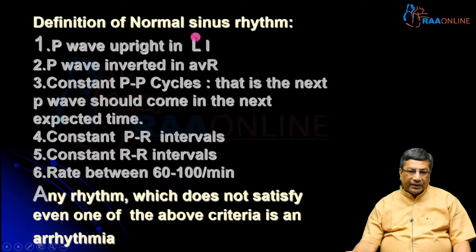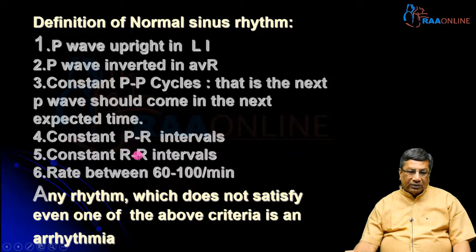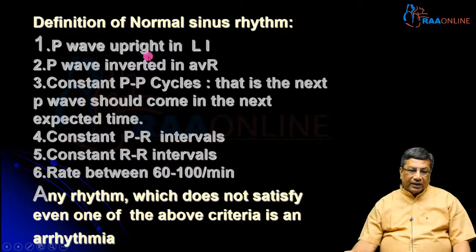There are six criteria to diagnose sinus rhythm on a regular ECG. First, the P wave must be upright in lead L1 and inverted in AVR — because AVR is 'no man's land' and all depolarization should go away from it. Second, the interval between two successive P waves must be constant throughout the ECG. Third, the PR interval must be constant. Fourth, the RR interval must be constant. Fifth, the heart rate must be between 60 to 100 per minute. All six criteria must be satisfied.